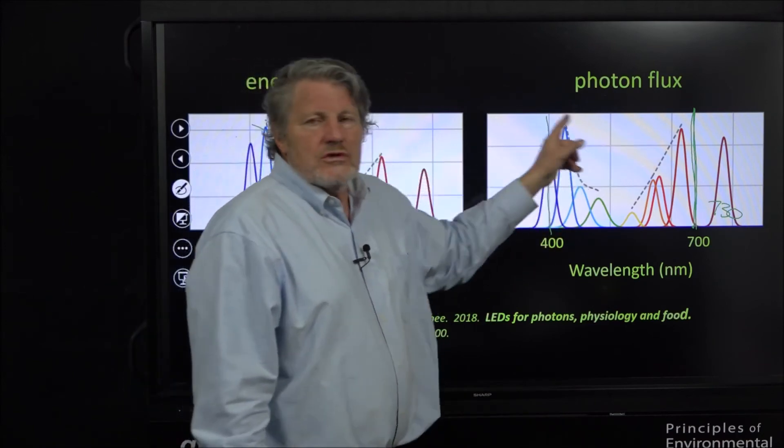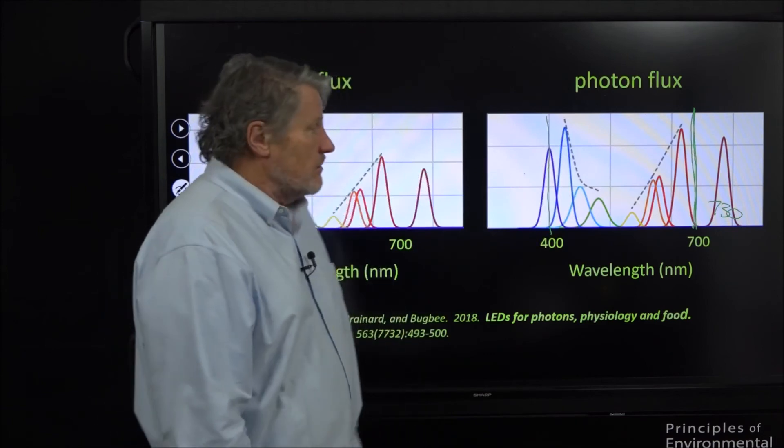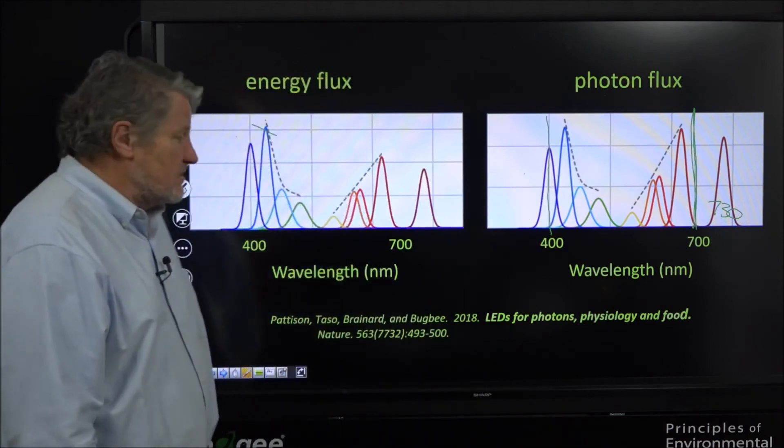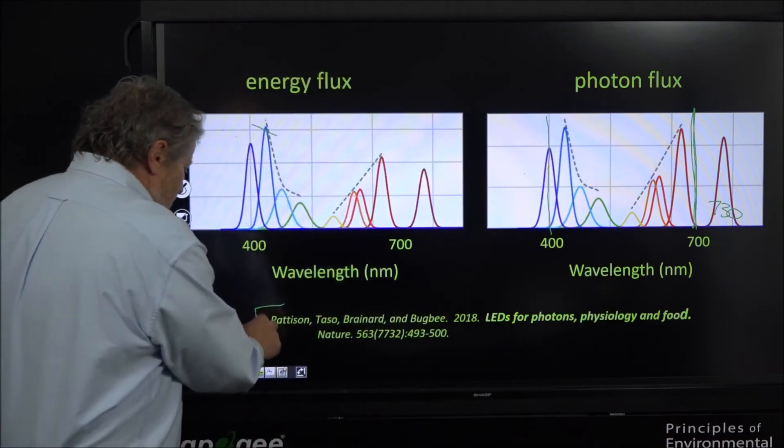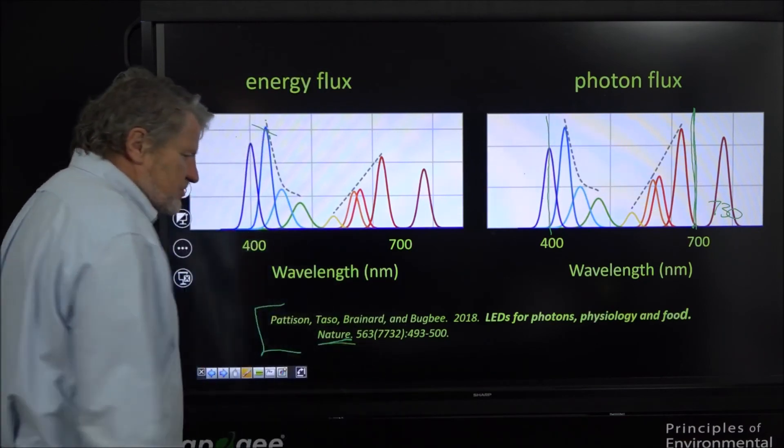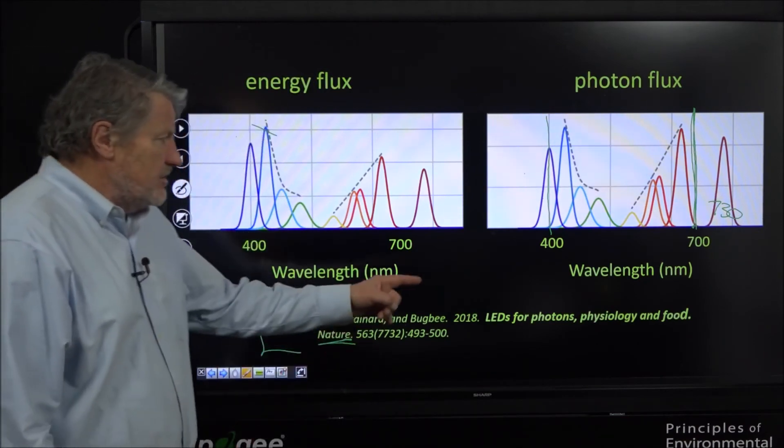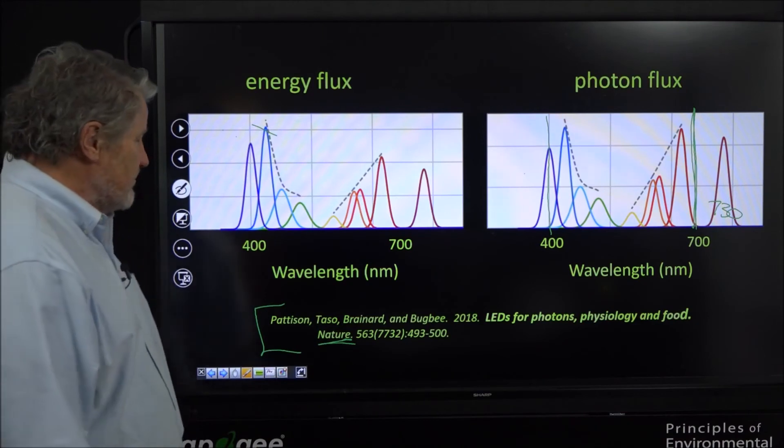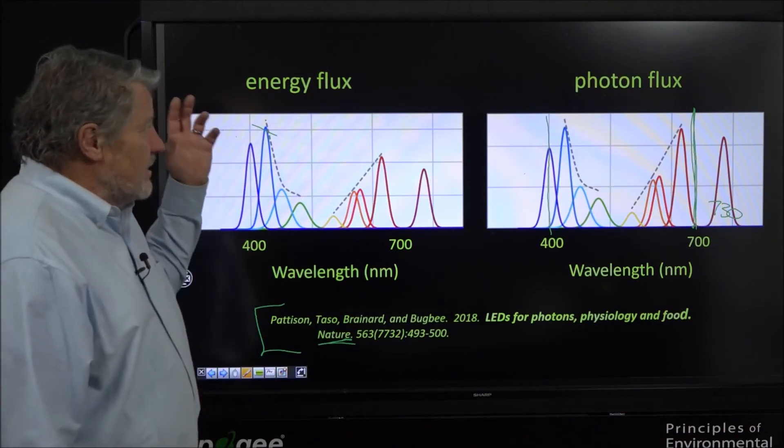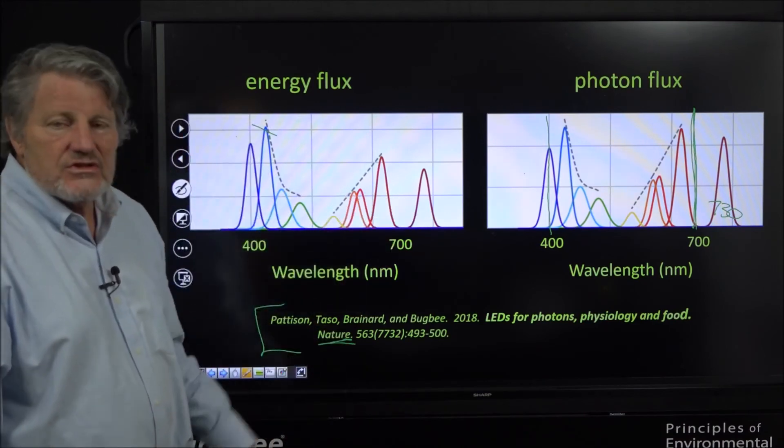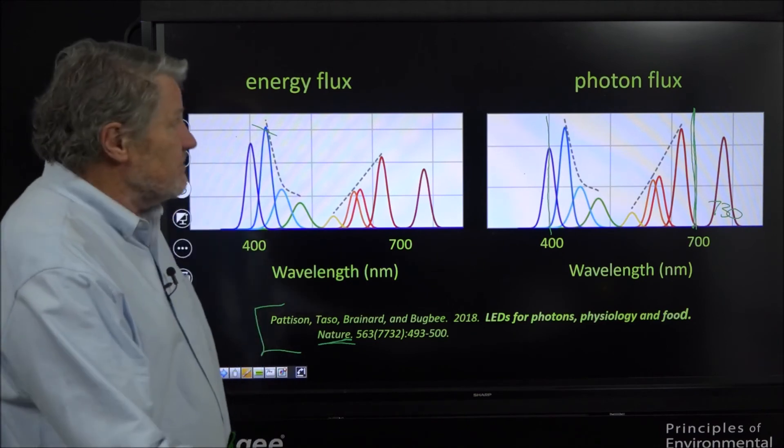You often see pictures of LEDs showing the energy flux and on an energy basis these are lower than these - the most efficient is blue. But that's not what drives photosynthesis, it's photon flux. When we graph the same data by photons, the reds and the blues are virtually identical. It's a tremendous thing. This is from a paper that we recently got published in the journal Nature, LEDs for Photons Physiology and Food, and it analyzes the economics of LEDs.